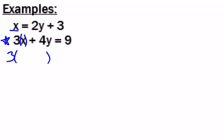3 parentheses plus 4y equals 9. And now into that parentheses, I'm going to put everything that the x was equal to. So x was equal to 2y plus 3. So I substitute in 2y plus 3.